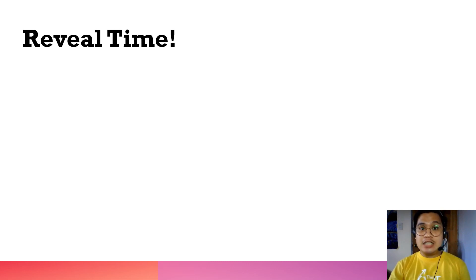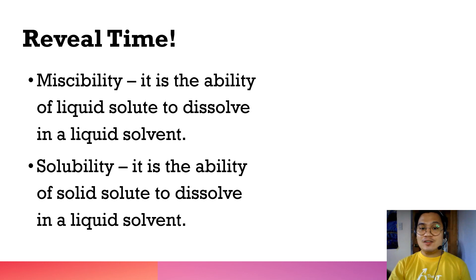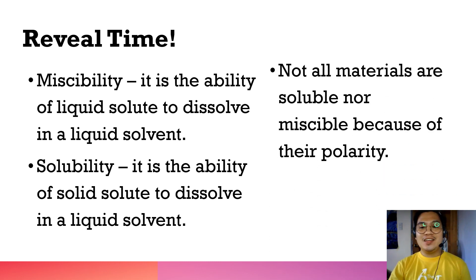What is the meaning of miscibility and solubility? Miscibility is the ability of a liquid solute to dissolve in a liquid solvent — it involves two liquid materials dissolving into each other. Solubility is the ability of a solid solute to dissolve in a liquid solvent — one solid and one liquid material mixing together. Not all materials are soluble or miscible because of their polarity. So what is the meaning of polarity and what is the connection of polarity to miscibility or solubility?